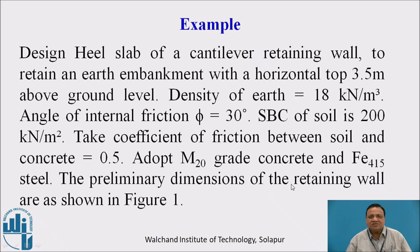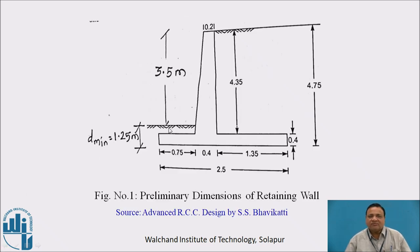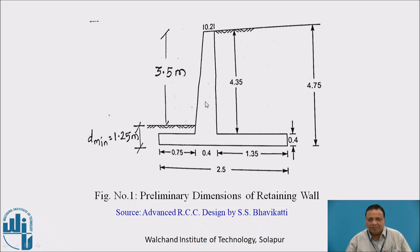The preliminary dimensions of the retaining wall are as shown in figure 1. This figure shows the preliminary dimensions — the vertical stem, the toe slab portion, and the heel slab portion. We have assumed 200 mm thickness at the top and 400 mm thickness at the bottom of the stem slab. Similarly, toe as well as heel slab thickness is assumed as 0.4 meters.